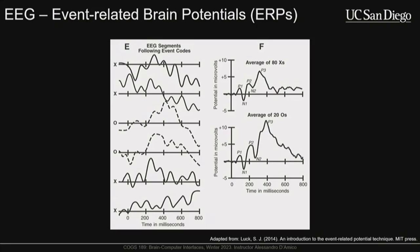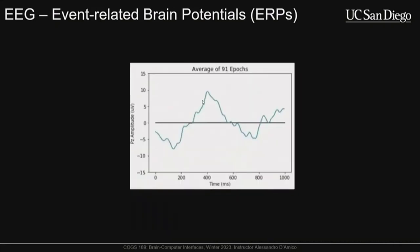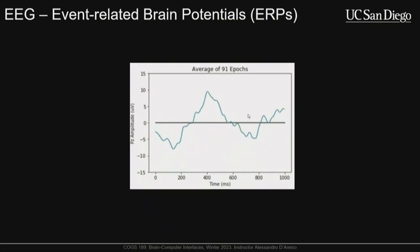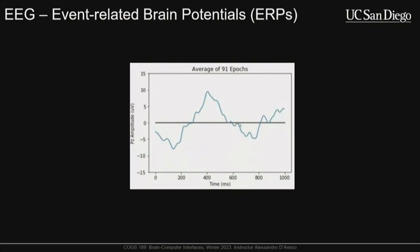Event-related brain potentials — ERPs — are EEG activity synchronized to an event. If you have events happening (like seeing a picture of a dog versus a cat) and you synchronize the activity from the onset of those stimuli and average them, you can see very clear components. The single trials are pretty messy, but as you add more and more trials the signal becomes clear. This gif made from actual data showcases that — the signal gets more and more smooth as you average, revealing this trend. That's where we end the slides.